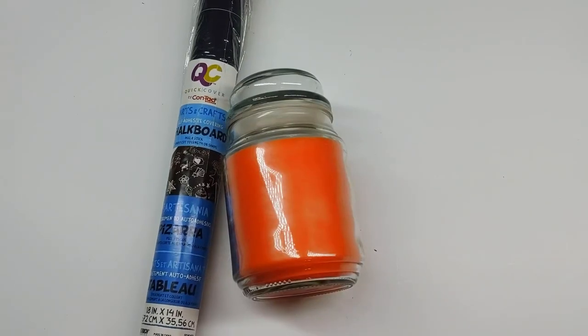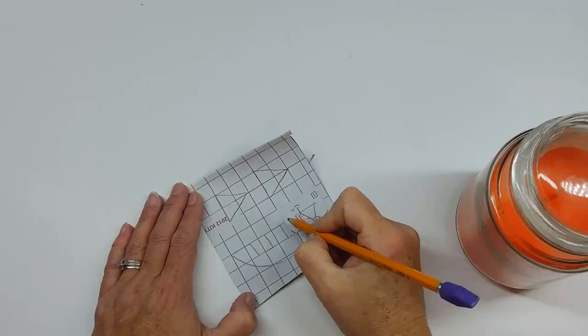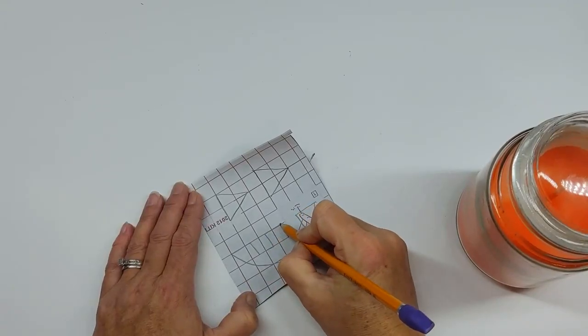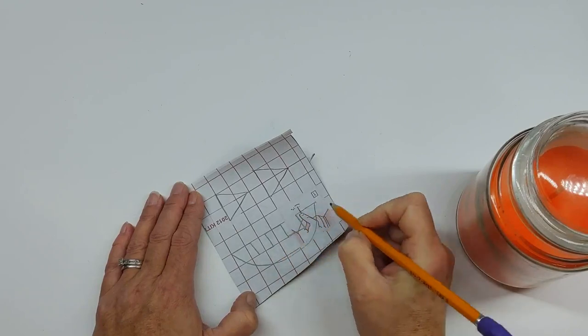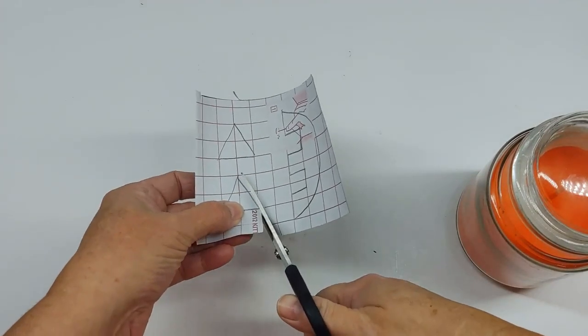The sixth DIY items came from Dollar General. On the back of the chalkboard adhesive, I just free-handed a jack-o'-lantern face, then just cut it out with scissors.